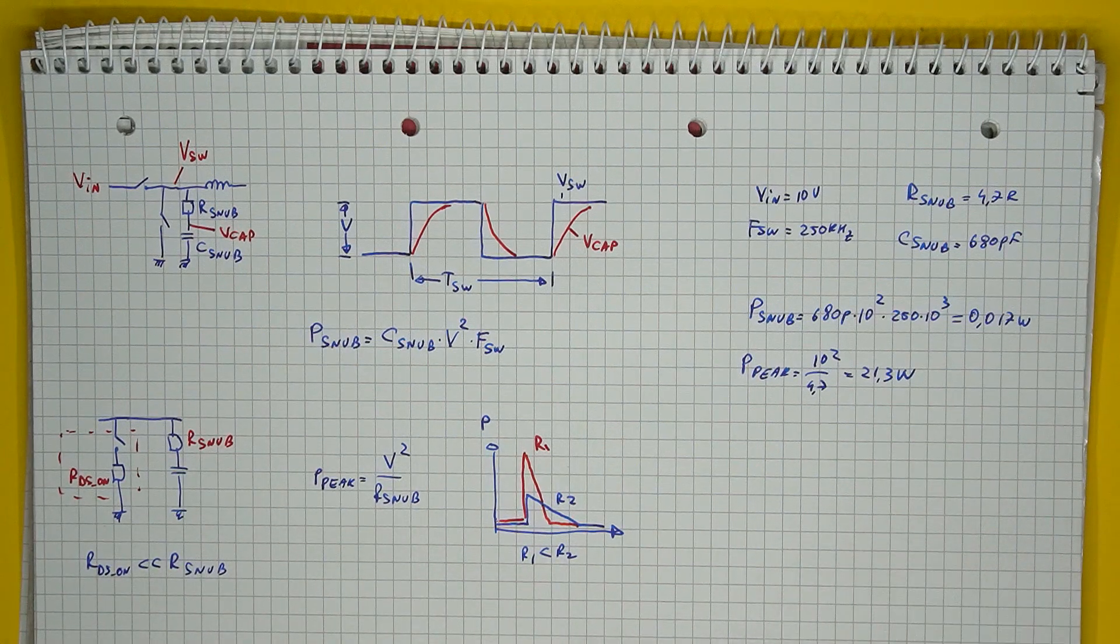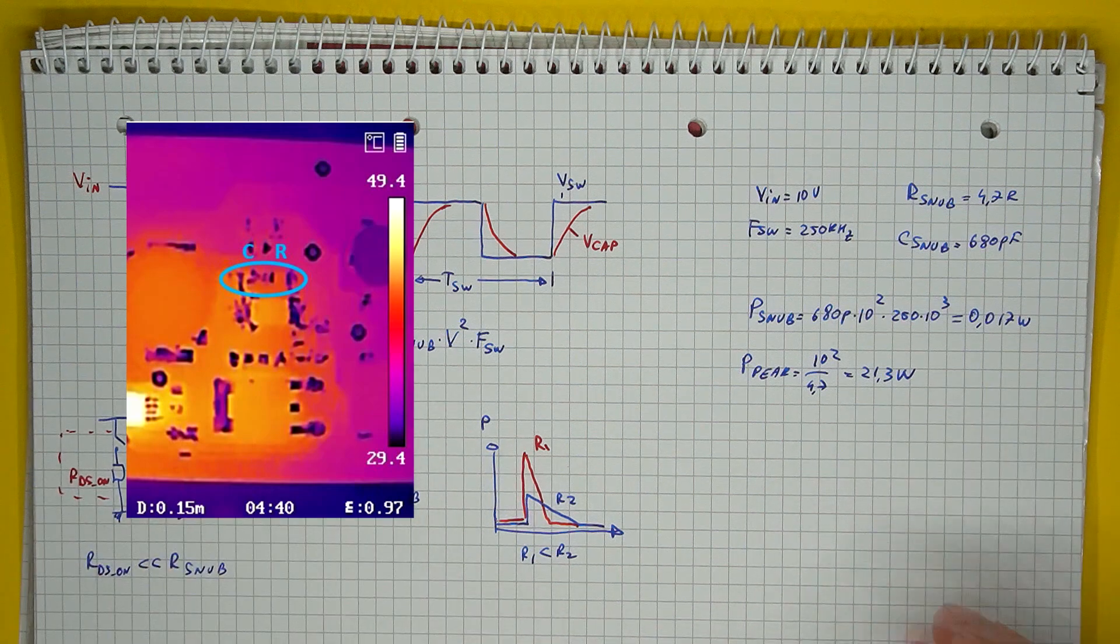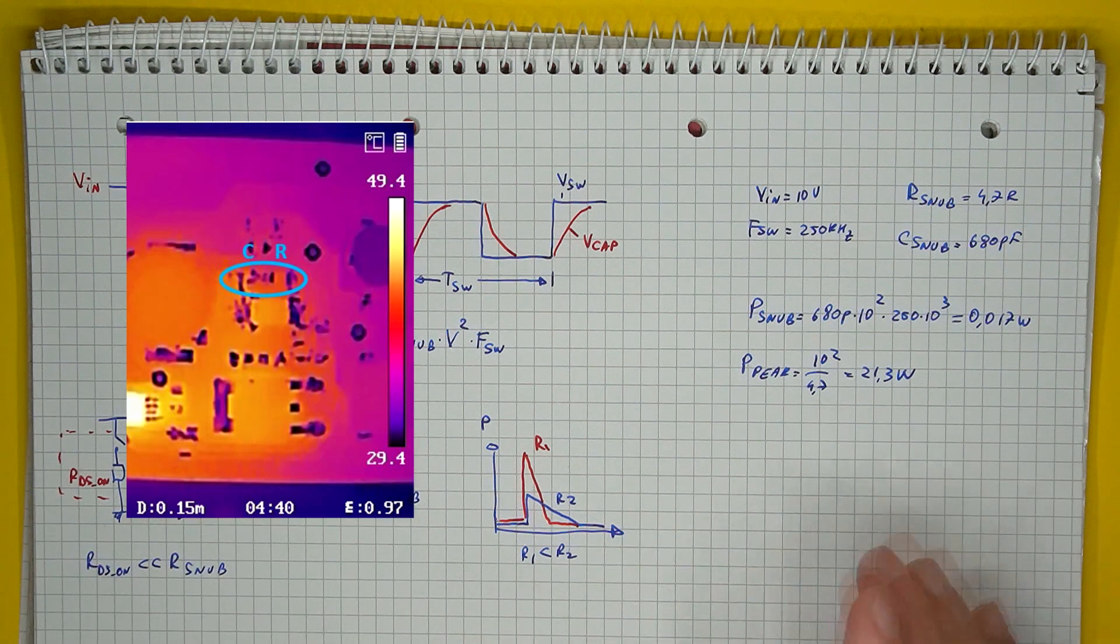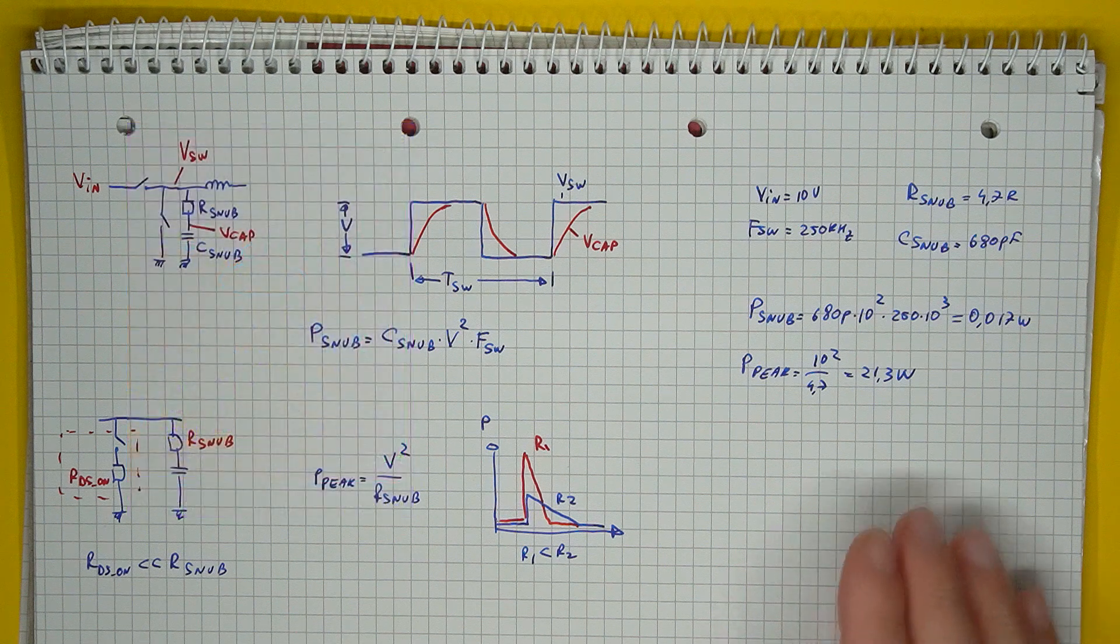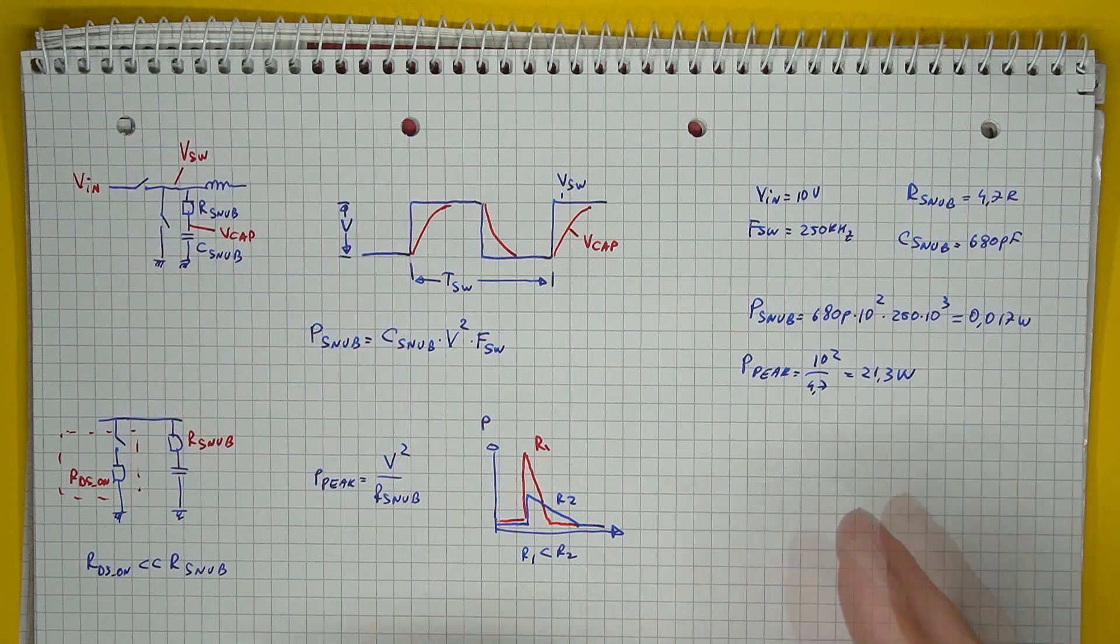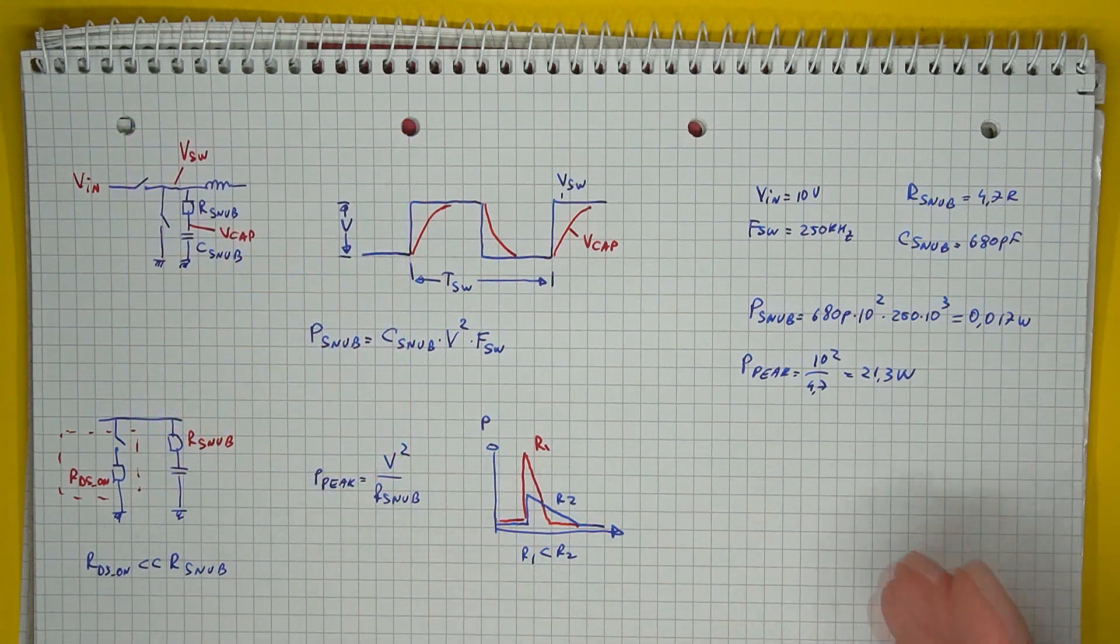So even though we don't really need a very large resistor, the power dissipation is very small, we can see this on a thermal measurement, it's running quite cold. However, we still need to choose a component that can actually withstand the peak power for short periods, so that it doesn't get damaged over time.